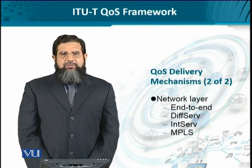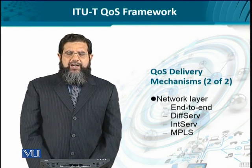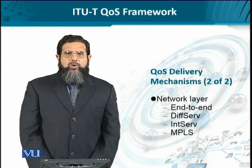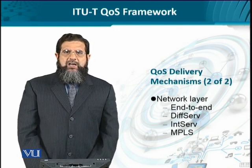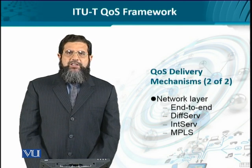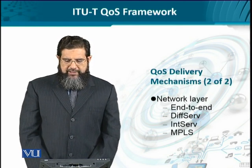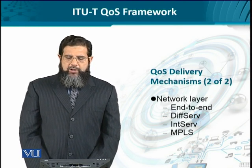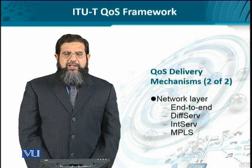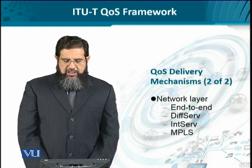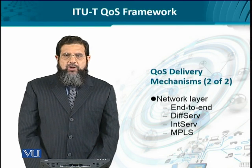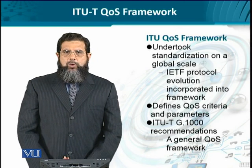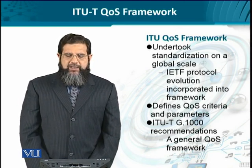At the network layer, we have end-to-end QoS provisioning, known as the IP layer QoS provisioning. Well-known architectures from the IETF are the differentiated services architecture, the integrated services architecture, and the legacy multi-protocol label switching. These network layer QoS provisioning mechanisms have their own pros and cons, and these architectures are worthwhile to be studied and considered.